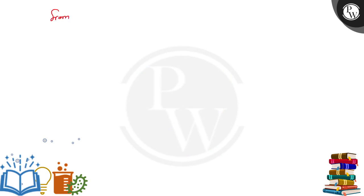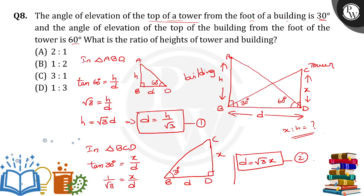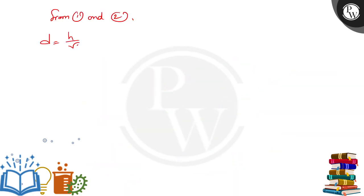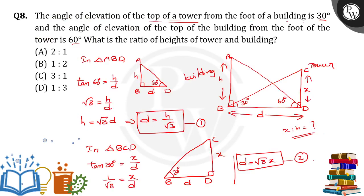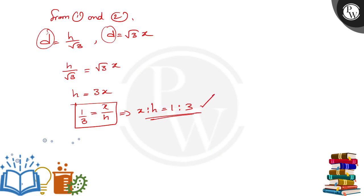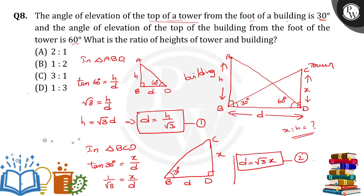From equations 1 and 2: equation 1 gives D equals H by root 3, and equation 2 gives D equals root 3 times X. Since both left-hand sides are equal, the right-hand sides are also equal: H by root 3 equals root 3 times X. Transposing root 3 to the right-hand side gives H equals root 3 times root 3 times X, so H equals 3X. Therefore X by H equals 1 by 3, meaning X to H equals 1 to 3. This is the ratio of the heights of the tower and the building. Option D is the right answer.